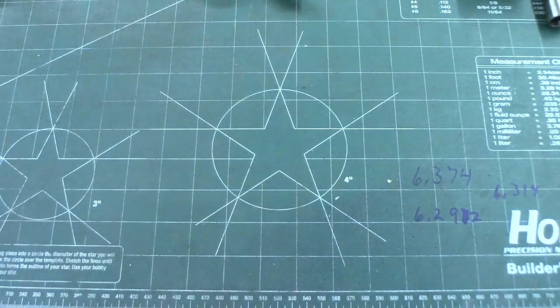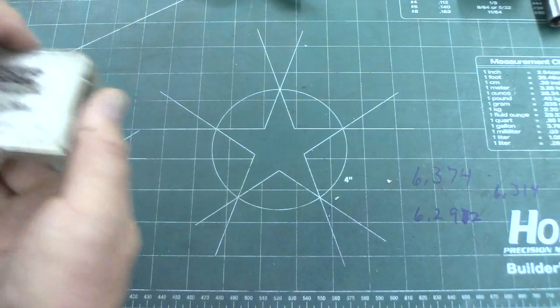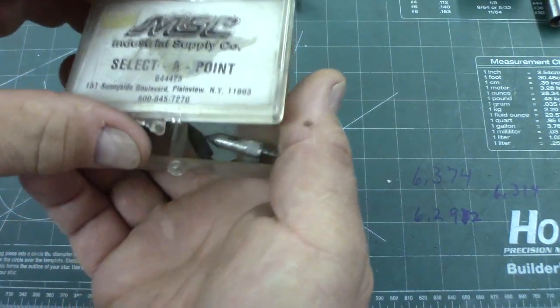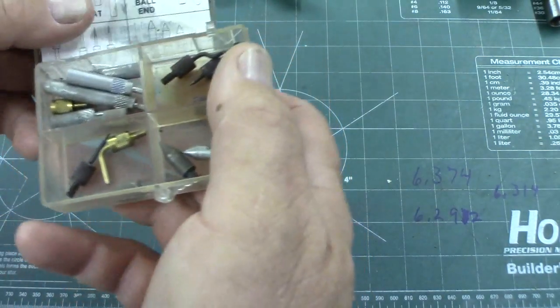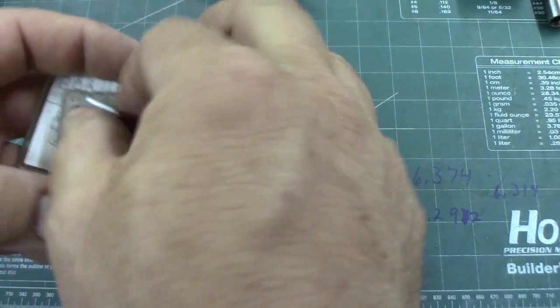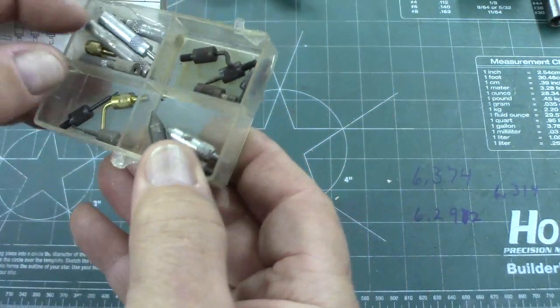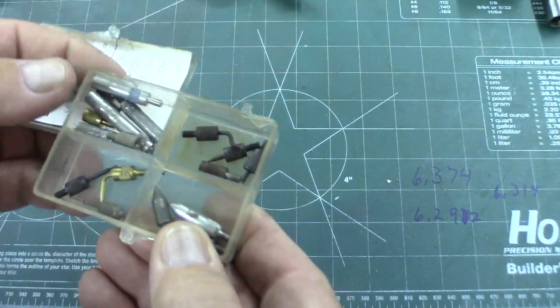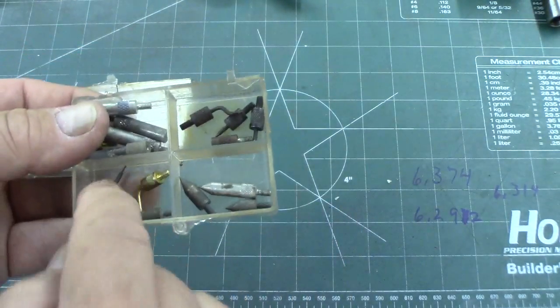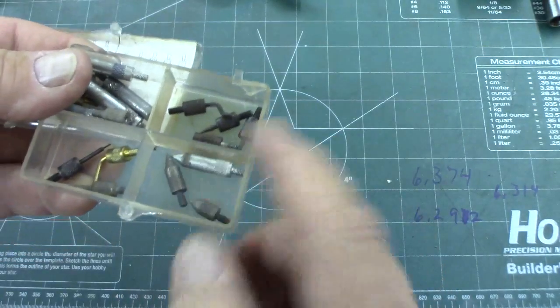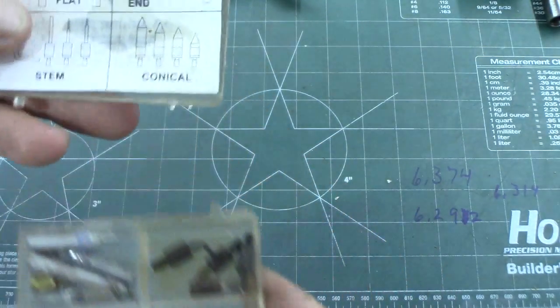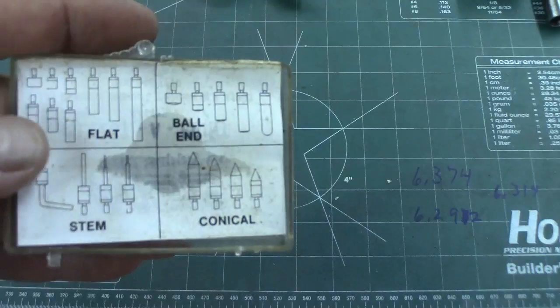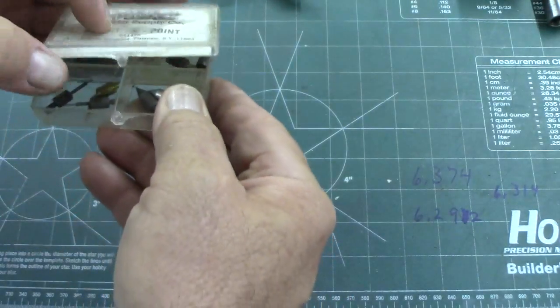We're going to save some of the best parts for last. A little plastic box here of select point from MSC, various points for your dial indicators and such, different kinds: flat ones, round ones, some really small pointed ones and some sharp pointed ones. There's a little chart on there. Those are always handy, having extra tips you can reach into better places.